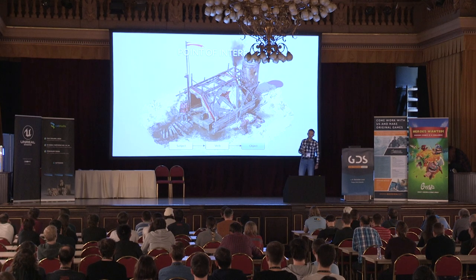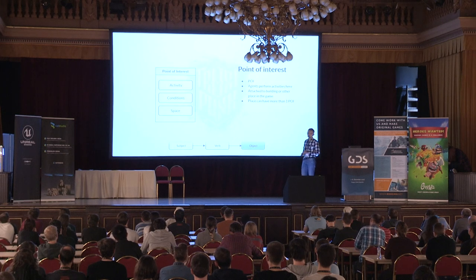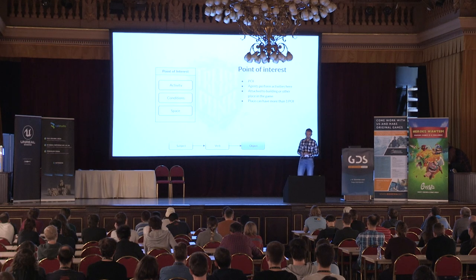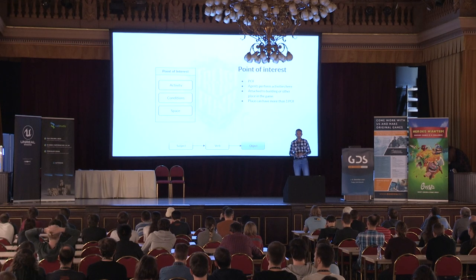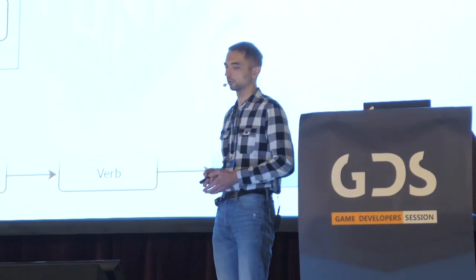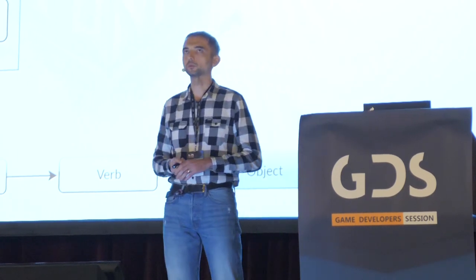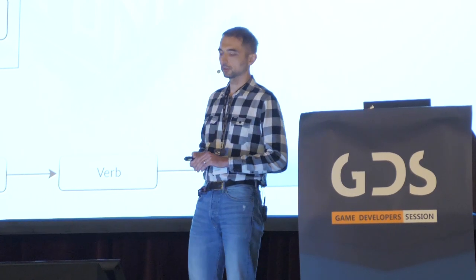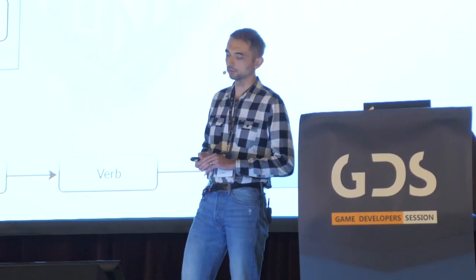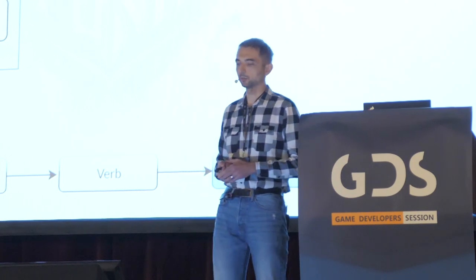We developed an abstraction called point of interest — POI for short. A point of interest is attached to a physical object in the game, such as a building or landmark, where an agent can go and perform activities. For example, the prison building has two POIs: one with the prison guard activity and one with the prisoner activity.